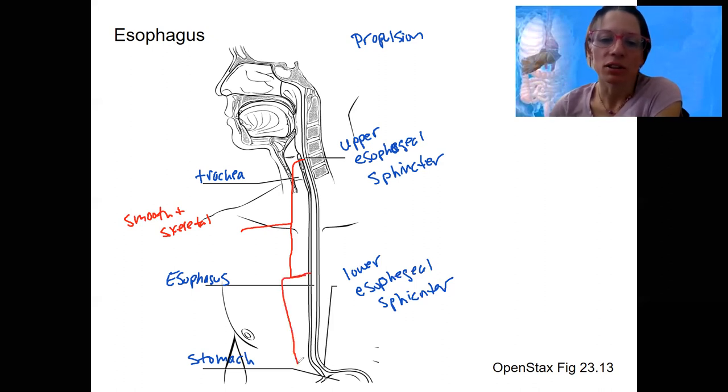But then this lower one-third is just smooth muscle. There's also smooth muscle up here, so some of that swallowing is going to be involuntary. This smooth muscle is going to contract and relax and allow our esophagus to move food, the bolus, down it.